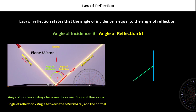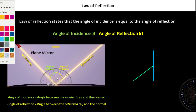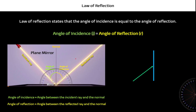Students often tend to make mistakes by trying to measure the wrong angle, which is totally wrong. It should always be between your ray and where your normal is. In exams, please learn to use a protractor to measure exactly what your angle of incidence and angle of reflection is going to be. So in this case, you should be measuring this angle, and for this one, you should be measuring this angle.